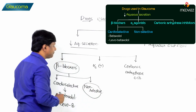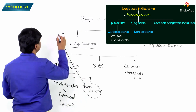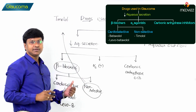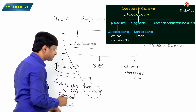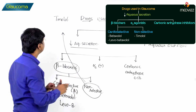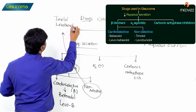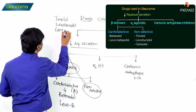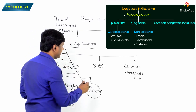The non-selective beta blockers which will reduce the aqueous humor production include timolol. Cardioselective beta blockers are those which act selectively on beta-1 receptors, whereas non-selective drugs act on various other beta receptors as well. The non-selective drugs include timolol, levobunolol, and carteolol. These are the non-selective beta blockers which will reduce the aqueous humor production.